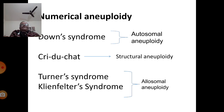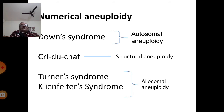Let us talk about numerical aneuploidy. In this video, I am talking about autosomal aneuploidy. There is a separate video for allosomal aneuploidy. Autosomal aneuploidy means the addition or deletion in autosomal pairs, while allosomal aneuploidy means the addition or deletion in sex chromosomes. You have to study Down syndrome and Cri-du-chat syndrome — Down syndrome for autosomal aneuploidy, Cri-du-chat syndrome for structural aneuploidy — and Turner syndrome and Klinefelter syndrome for allosomal aneuploidy, which are covered in a separate video already uploaded in your LMS.